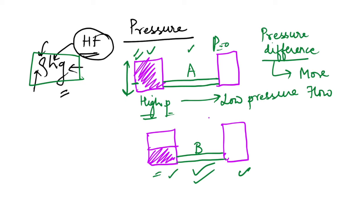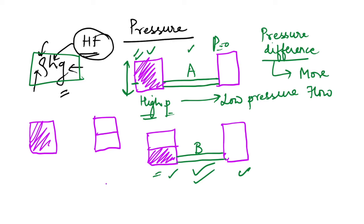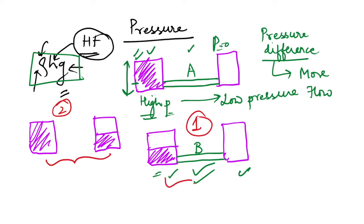To further prove the point: suppose one cylinder is full and another is half filled. Will the flow rate differ compared to a full cylinder and an empty one? No, there will be no difference, because it is the pressure difference that matters. Even though absolute pressures differ, if the pressure difference is the same, the flow rate will be the same.